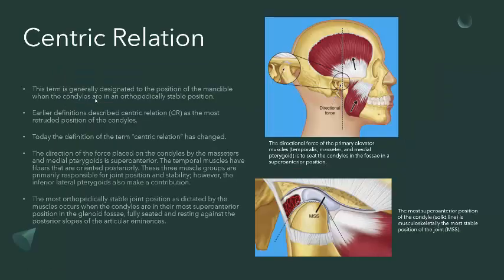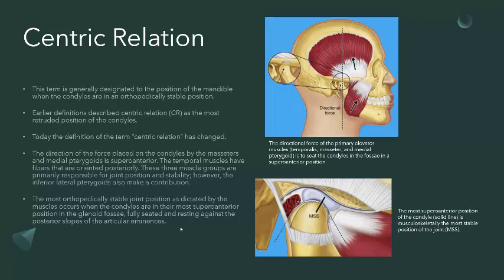Centric relation — the term. This term has been in use for ages in dentistry, both in prosthodontics as well as in occlusion and even in orthodontics. This term is generally designated to the position of the mandible when the condyles are in an orthopedically stable position. Previously we defined this term as the most retruded position of the condyles, but today we know that was not correct and the definition has changed. The direction of the force placed on the condyles by the masseters and medial pterygoids is actually supero-anteriorly.